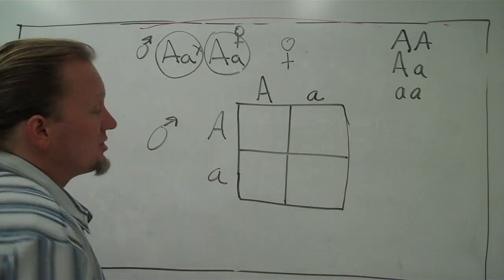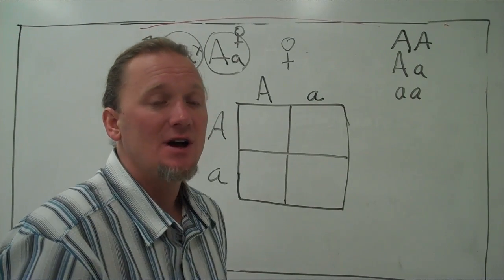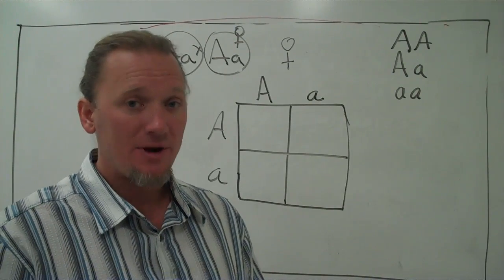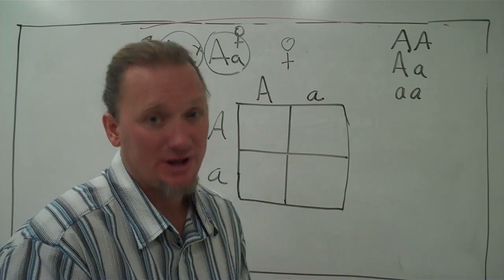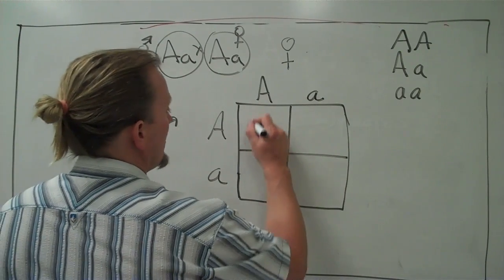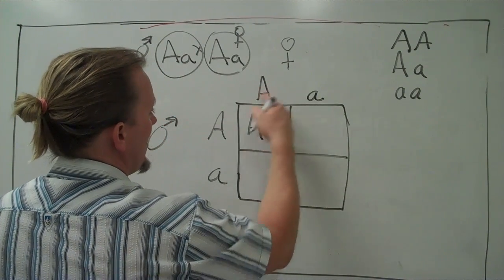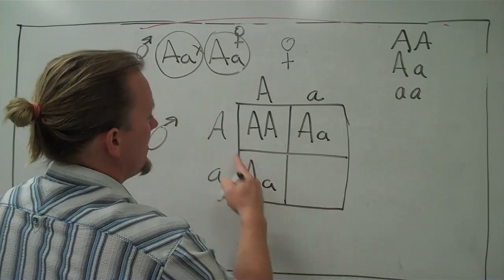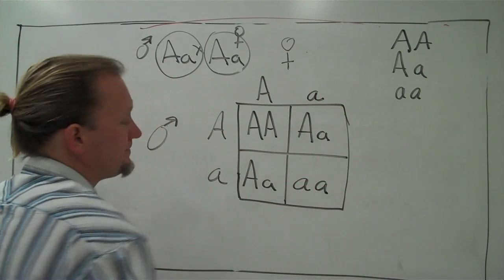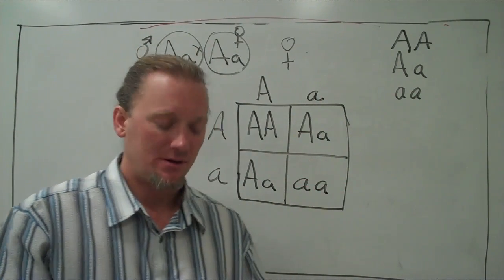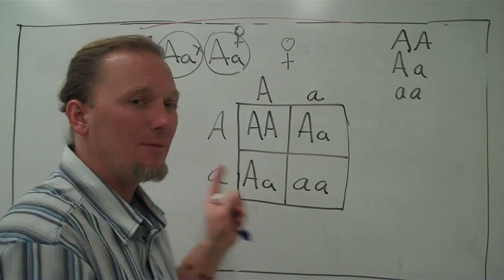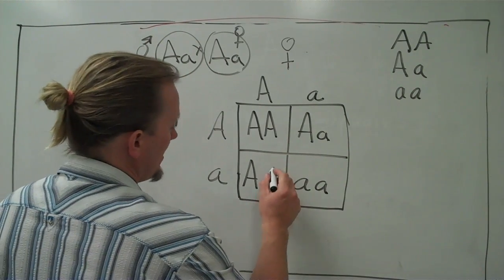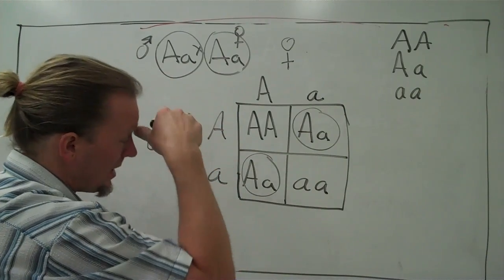The male is the same story — he can either give a big A or a little a. Because of independent assortment and crossing over, there's really an even 50-50 split chance of which allele each parent will pass on. This box gives us all the different combinations of alleles in the offspring and also tells us the frequency, or how common, each one is. Every box is equally common.